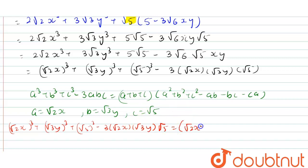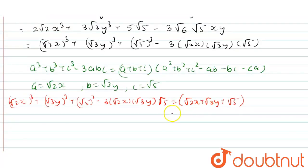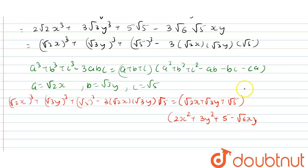This equals (a + b + c), that is (√2x + √3y + √5), multiplied by (a² + b² + c² - ab - bc - ca), which is (2x² + 3y² + 5 - √6·xy - √15·y - √10·x).